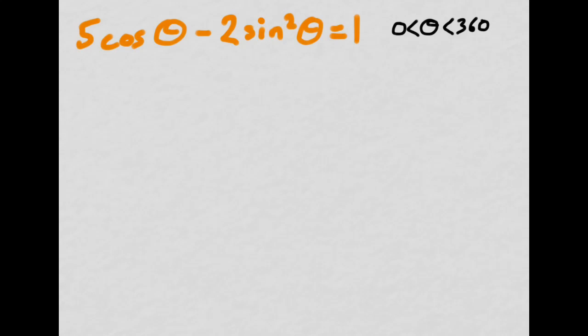So here I have an equation that features both cosine and sine. I can't solve equations featuring two different ratios without using an identity. And it's the fact that we've got a ratio squared that tells me I'm going to need to use the identity I just mentioned.